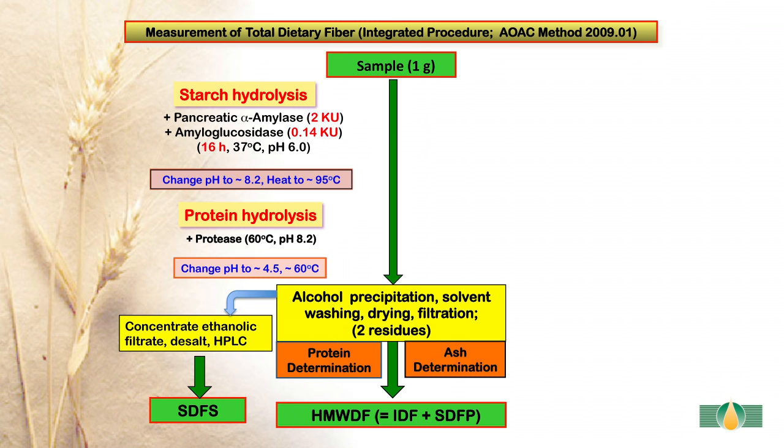On recovering the high molecular weight dietary fibre, the soluble fraction passing through the sintered glass funnel is then concentrated, desalted and analysed by HPLC to measure soluble dietary fibre that is soluble in 78% alcohol, or SDS.